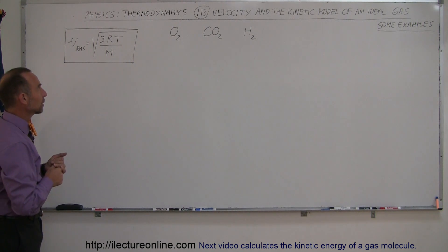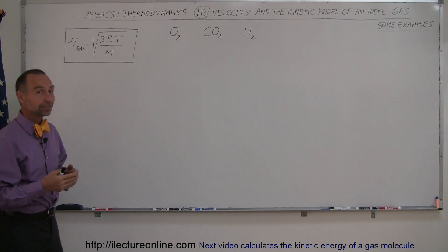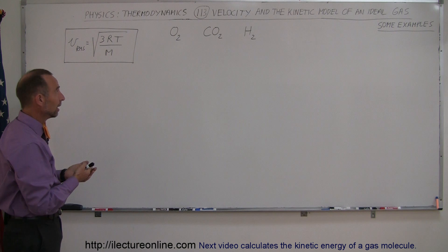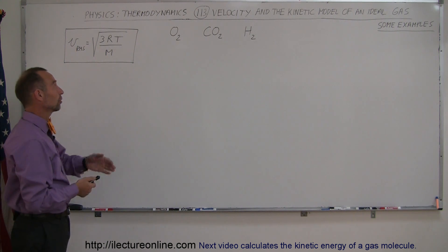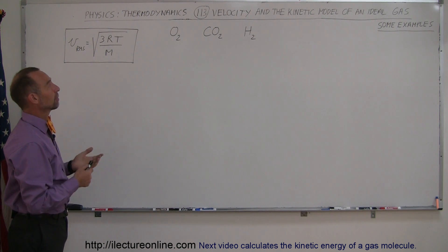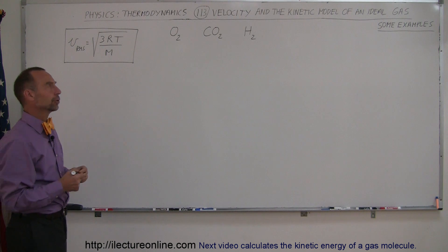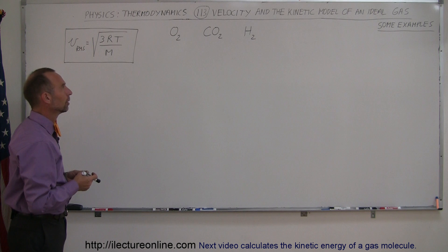Hey, welcome to iLecture Online. Here we're going to show you how to calculate the RMS velocity of three different kinds of molecules: the oxygen molecule, the carbon dioxide molecule, and the hydrogen molecule. In the atmosphere, oxygen and hydrogen are diatomic molecules.